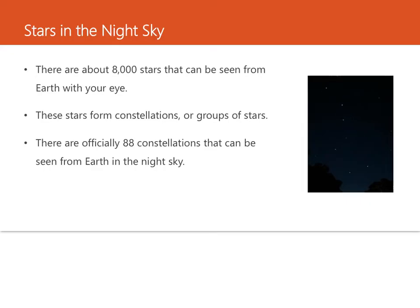Stars have very different sizes, temperatures, and colors. The sun is only an average-sized star, so there are many stars in the universe that are much larger than the sun, and many that are much smaller. Stars can take on a range of different colors, including blue, orange, red, and yellow.